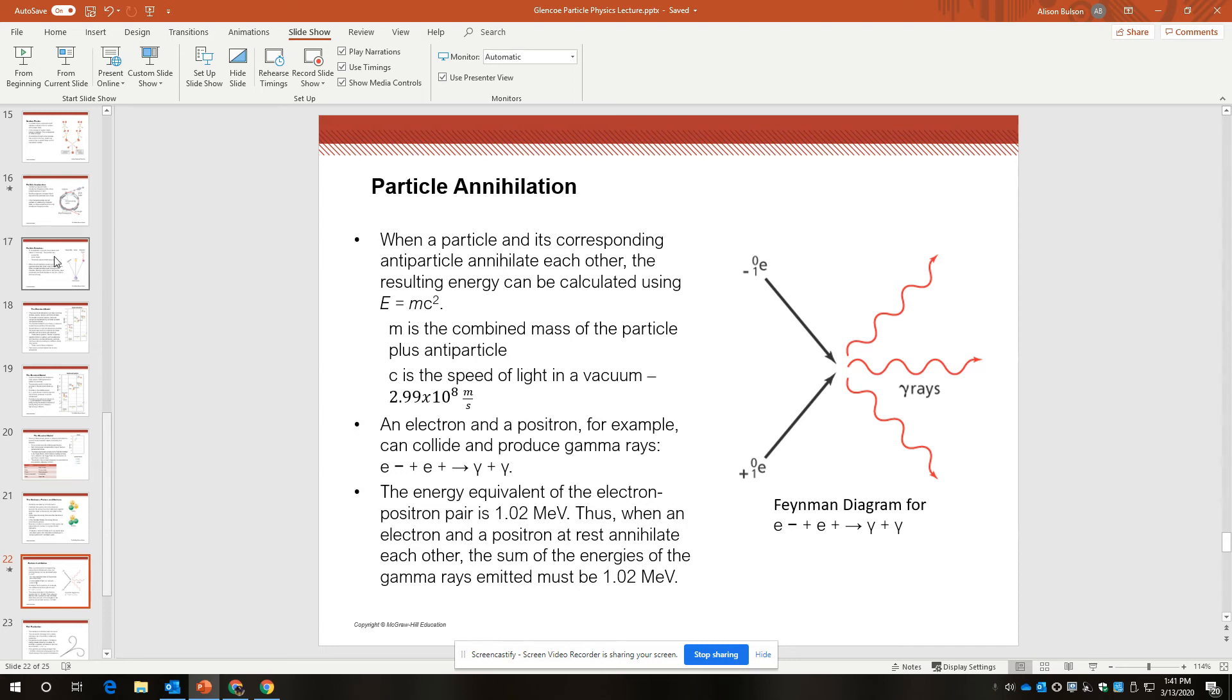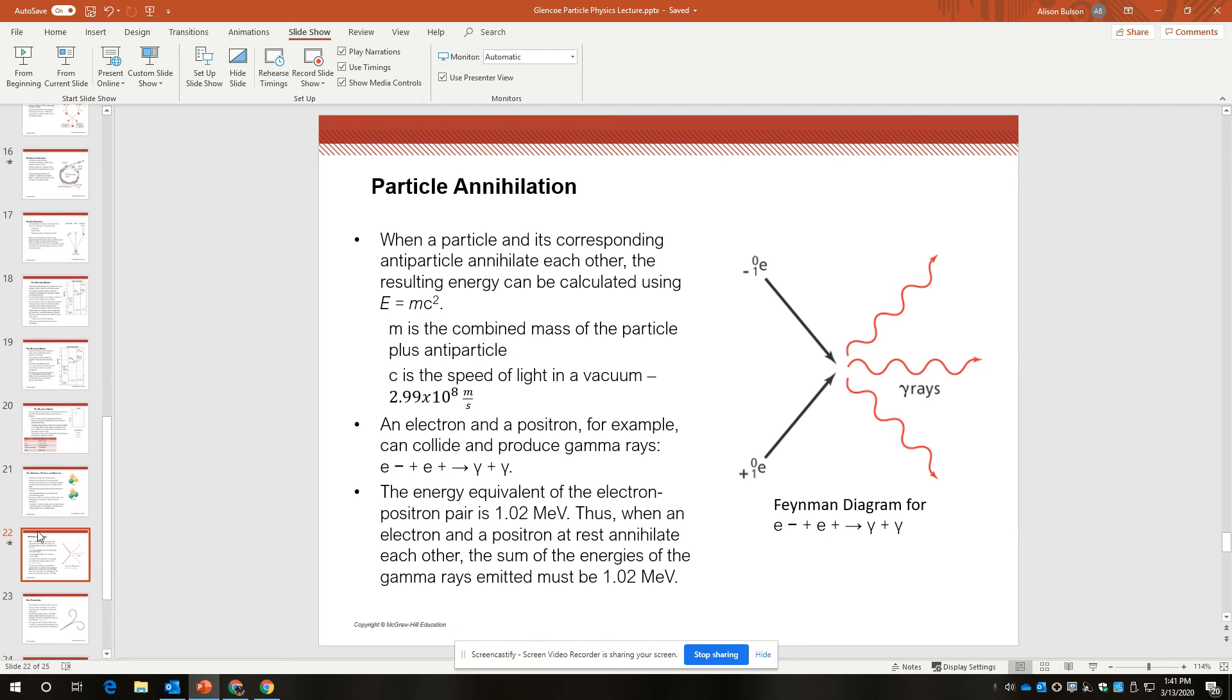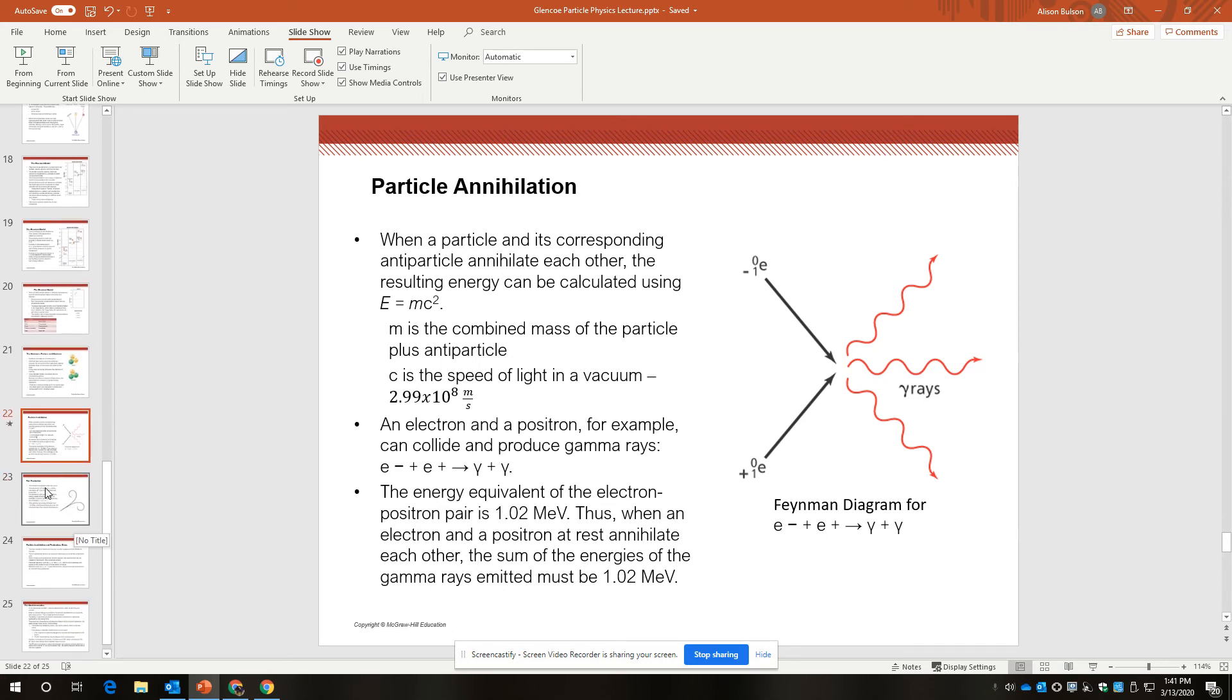And so the gamma rays that are produced by a particle annihilation tend to be larger than the rest energy of the particles. We can talk more about that in class.